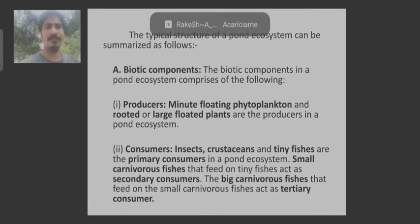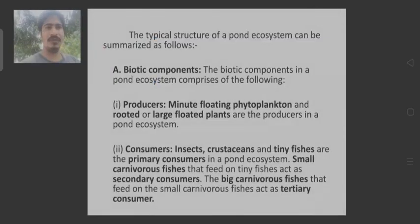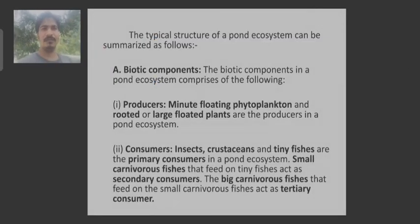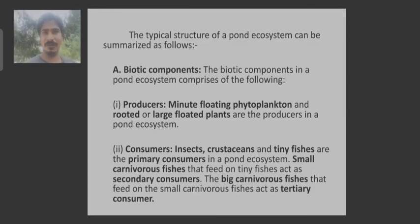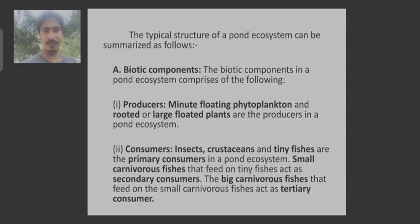The biotic components of the pond ecosystem comprise the following. First are the producers, which are the minute floating phytoplanktons and rooted plants. Phytoplankton is a small group of aquatic organisms that are autotrophic in nature, and they form the producers of the pond ecosystem.